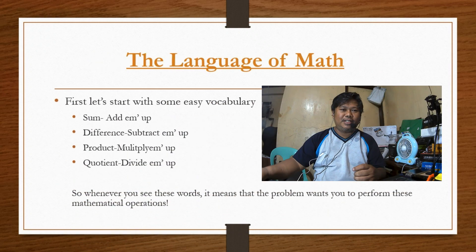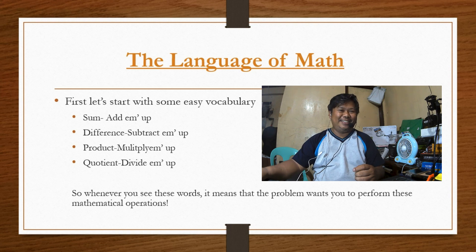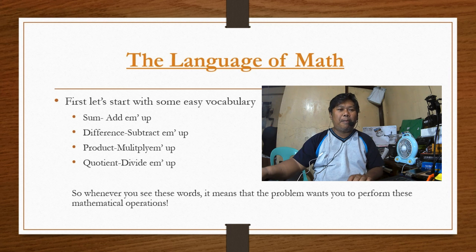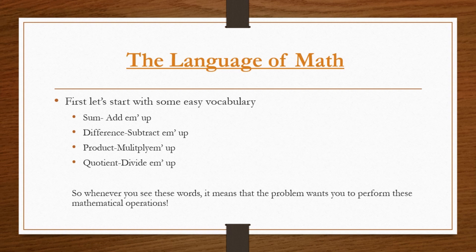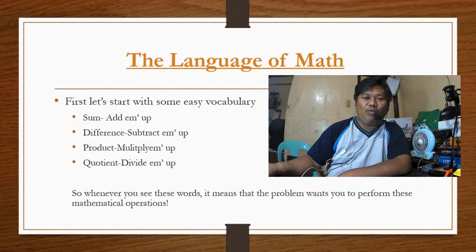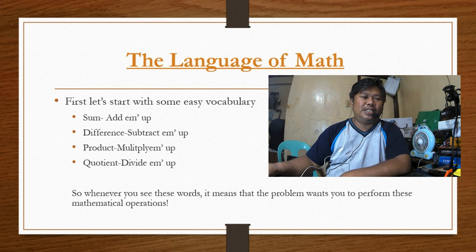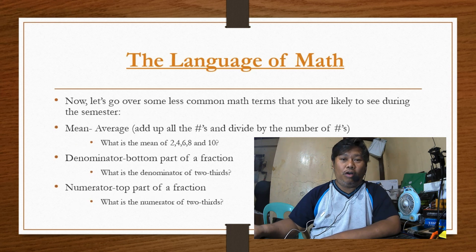We have: sum, difference, product, and quotient. When you say sum, you add them up. Difference, you subtract. Product, you multiply. Quotient, you divide. Whenever you see these words, it means the problem wants you to perform a mathematical operation.